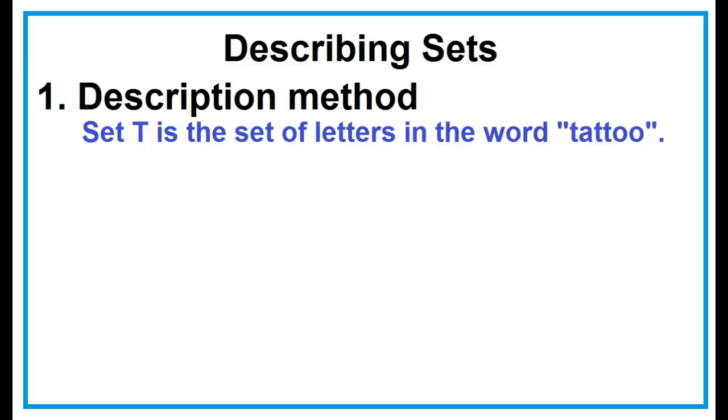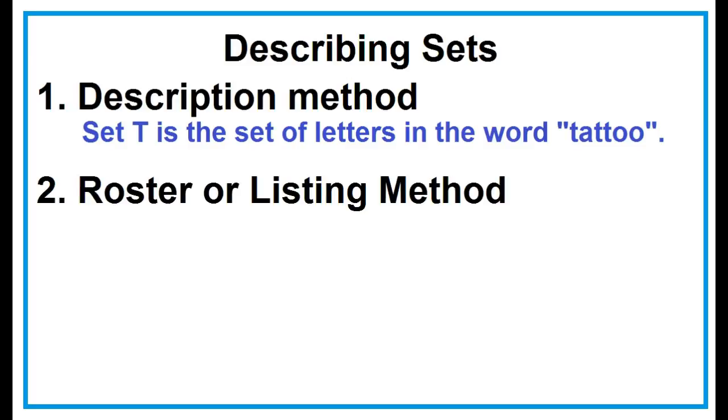There are three ways in describing a set. One is description method. Example: Set T is the set of letters in the word tattoo. Two is roster or listing method.